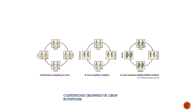Here is continuous cropping versus crop rotation shown visually. On the very left-hand side you can see corn planted four times — that's continuous corn in the same field for four years. A corn-soybean rotation would be corn year one, soybeans year two, corn year three, and soybeans year four. And then there's a corn, soybean, alfalfa, alfalfa rotation used for different types of farms like dairy farms — corn year one, soybeans year two, alfalfa year three, and year four.